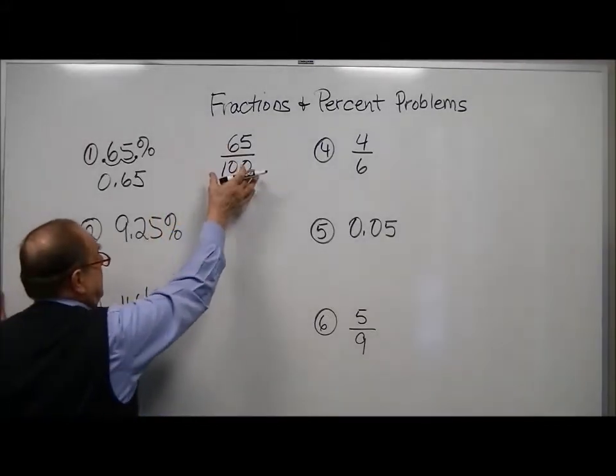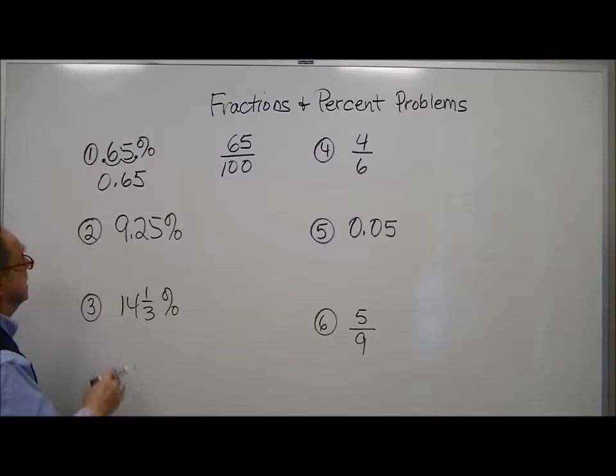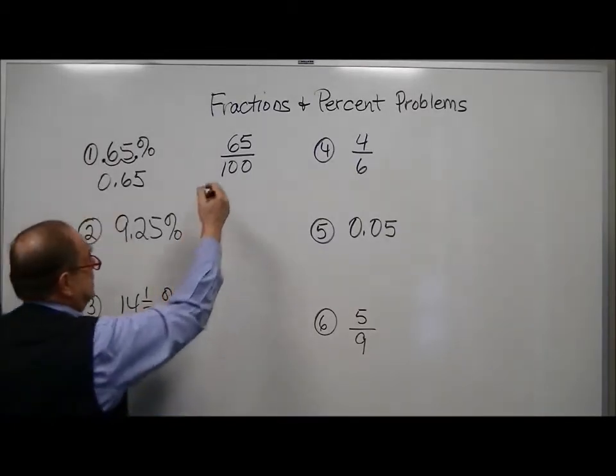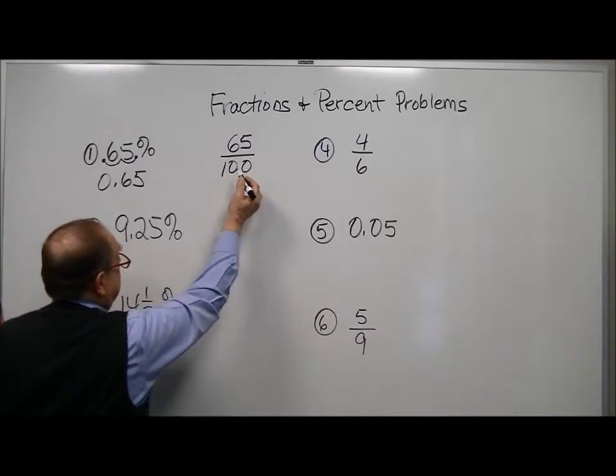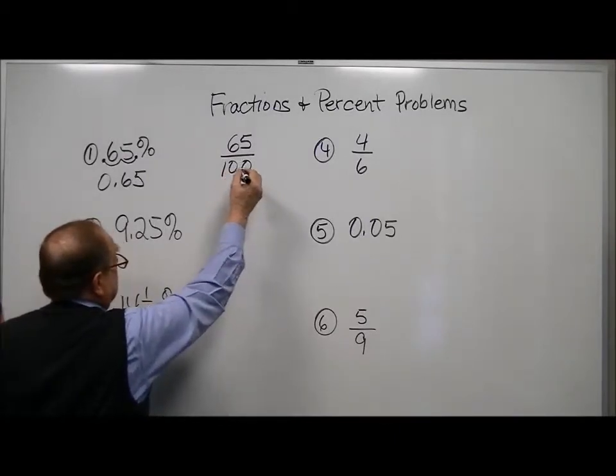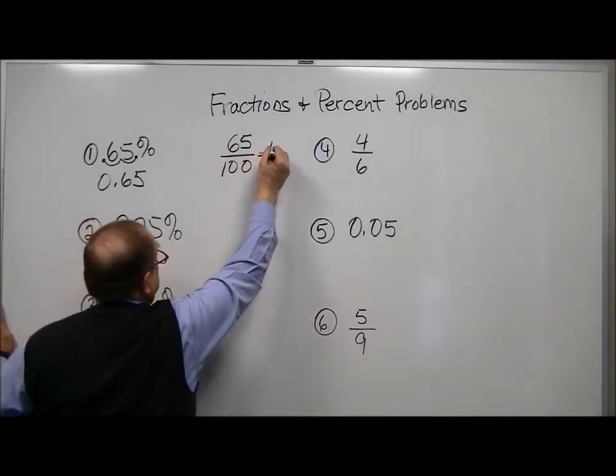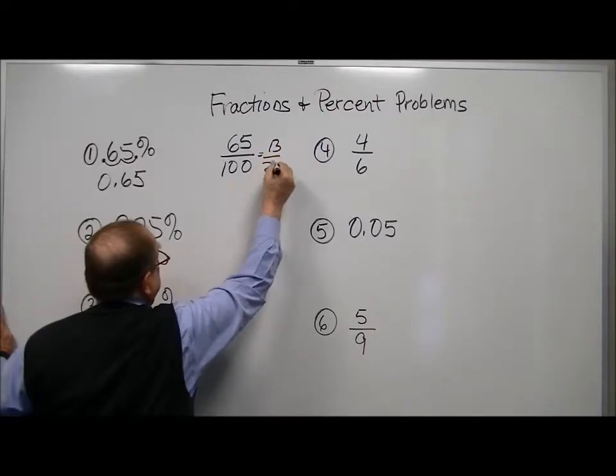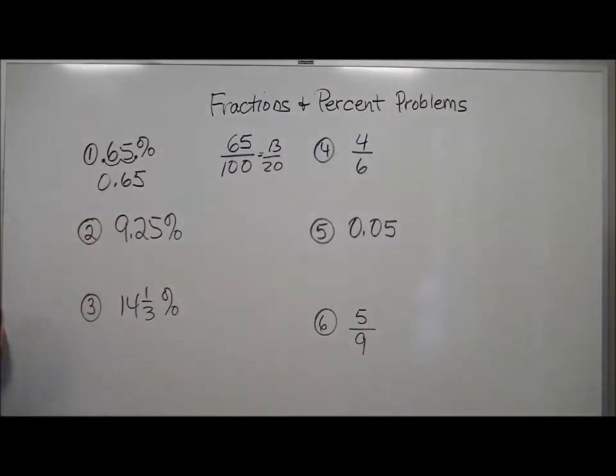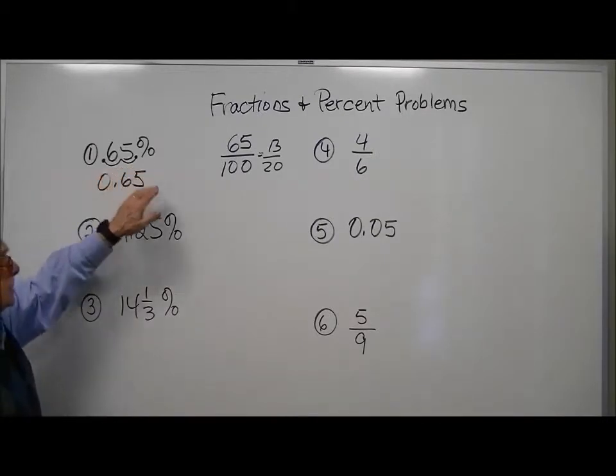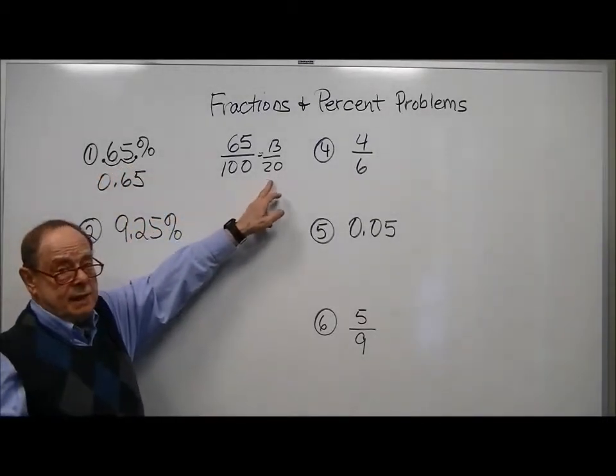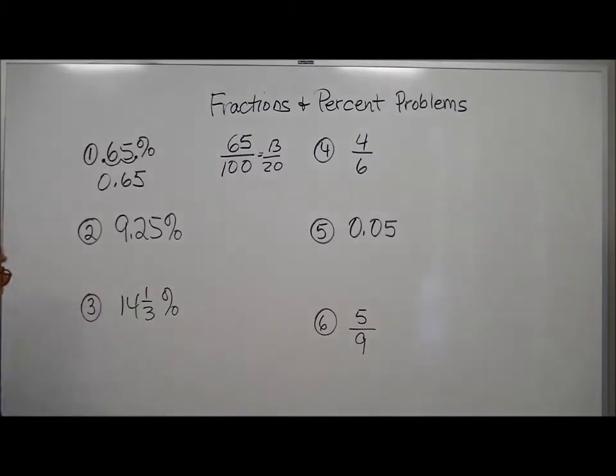And this would be the fractional form of 65 percent. If you reduce that, you can take a five out of each one, so this would be 13 twentieths. There's the decimal form of 65 percent and the fractional form.